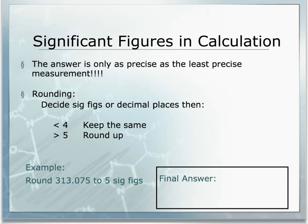Let's do another rounding example as a reminder. Here's a value we want to round to five sig figs, so we start at the left and count over one, two, three, four, five — so the seven is where our value cuts off. Next to it is a five, so the five rounds the seven up, and our final answer is 3.1308 because our seven is rounded up by the five.